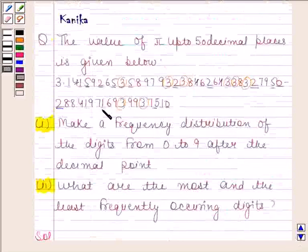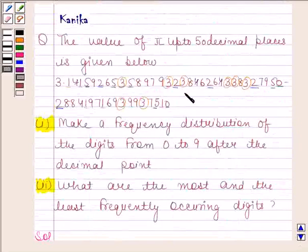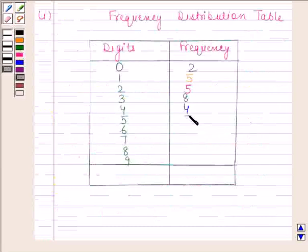4 appears 4 times, so frequency of 4 is 4. 5 appears 5 times. Frequency of 5 is 5.